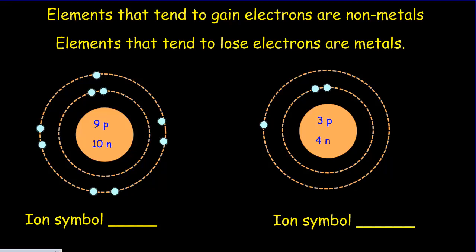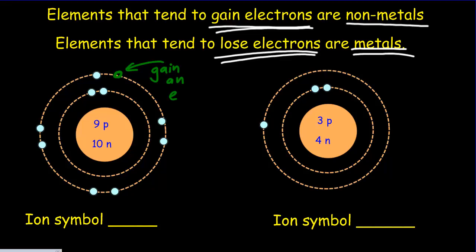So elements that tend to gain electrons are non-metals. If you tend to lose electrons, then you've got metals. Which of these two is likely to gain an electron and which one's likely to lose an electron? Hopefully you said this guy is likely to gain an electron, whereas this guy here is likely to lose.